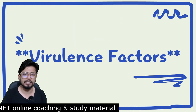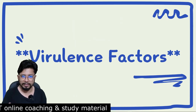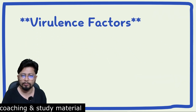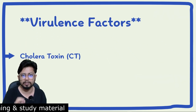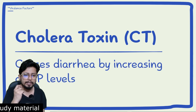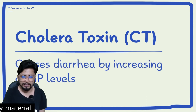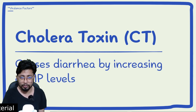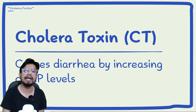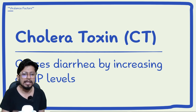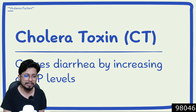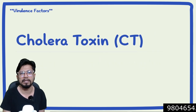Virulence factors that are involved in Vibrio cholerae — what are the virulence factors? The first is cholera toxin, CT. Cholera toxin is an exotoxin, also known as an enterotoxin, that attacks our intestinal cells and causes diarrhea by increasing the cyclic AMP levels in our body.